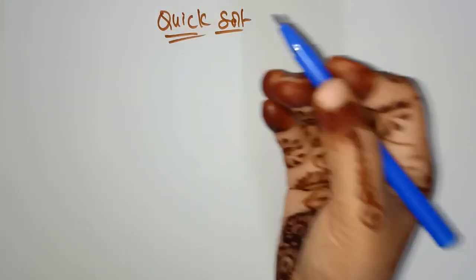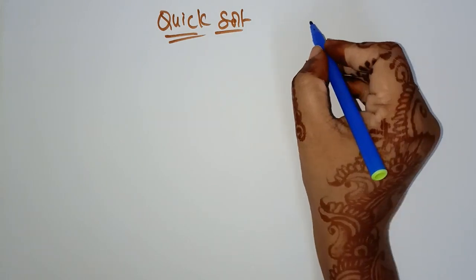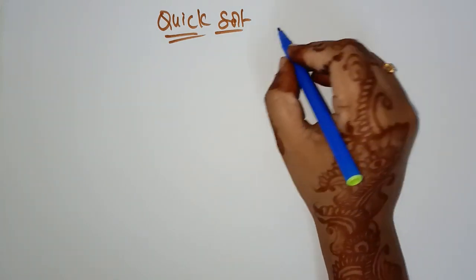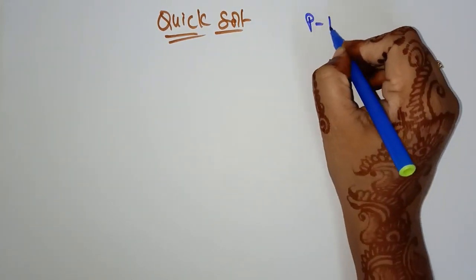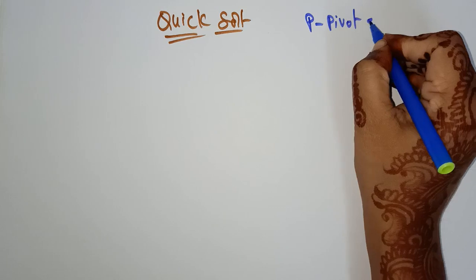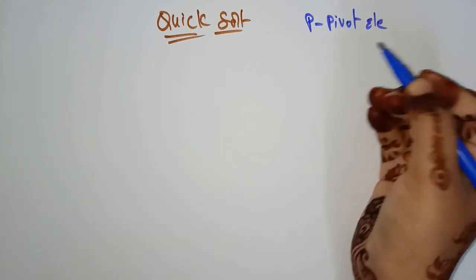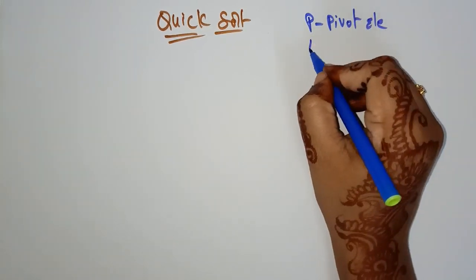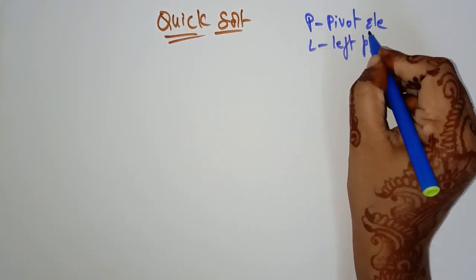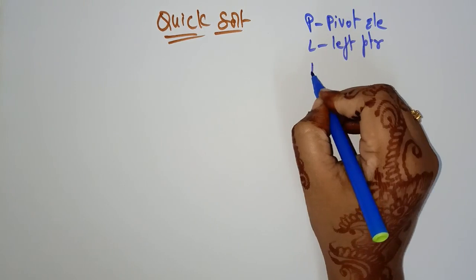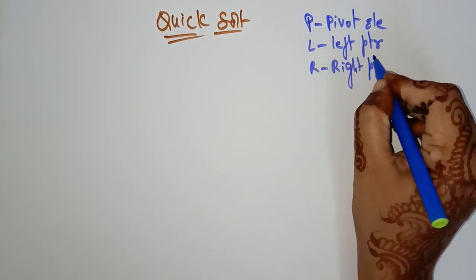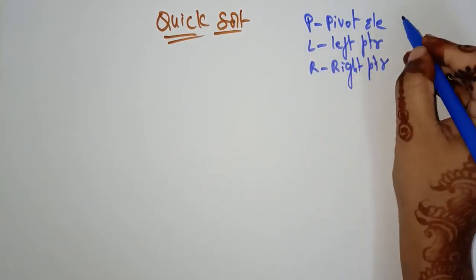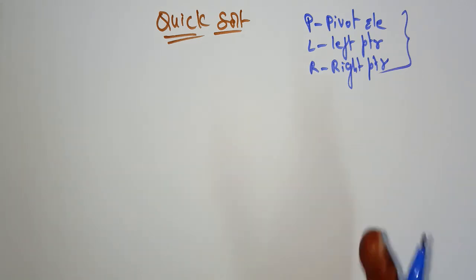In the quicksort algorithm there are three terms that you have to note. P is the pivot element. L is the left pointer and R is the right pointer. With the help of these three terms you are going to sort an array.